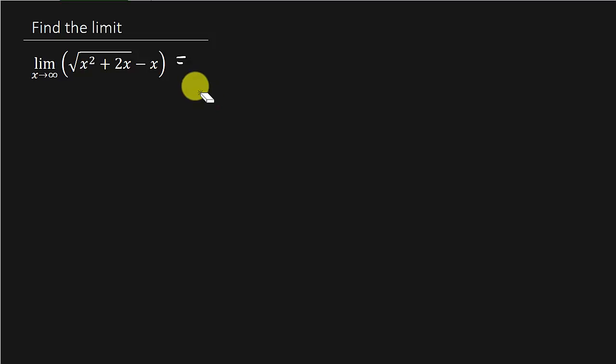So how do we go about working this? Well, what we want to do is rationalize the numerator. We want to multiply the numerator and the denominator by the conjugate of the numerator.